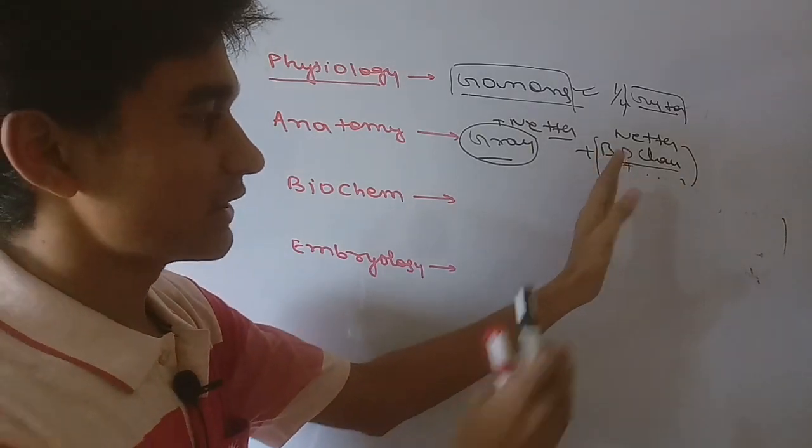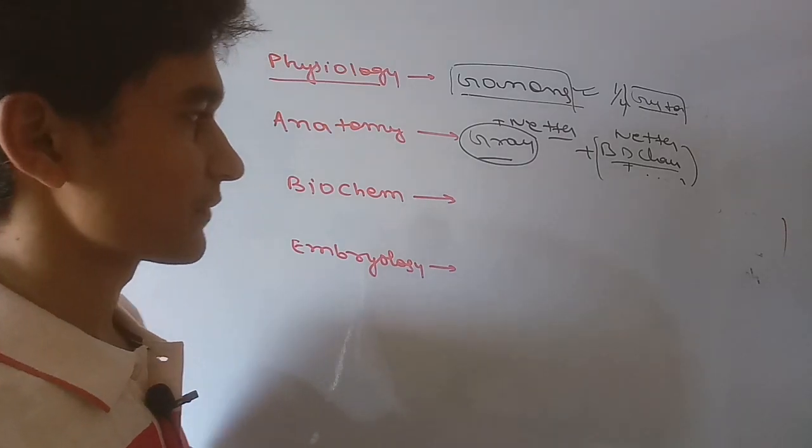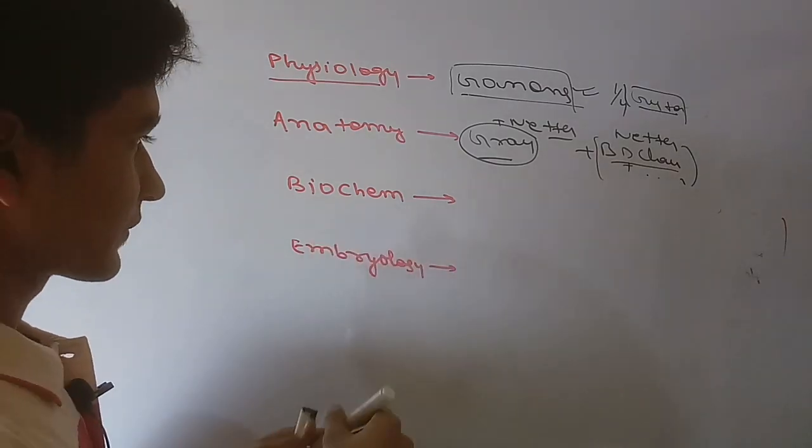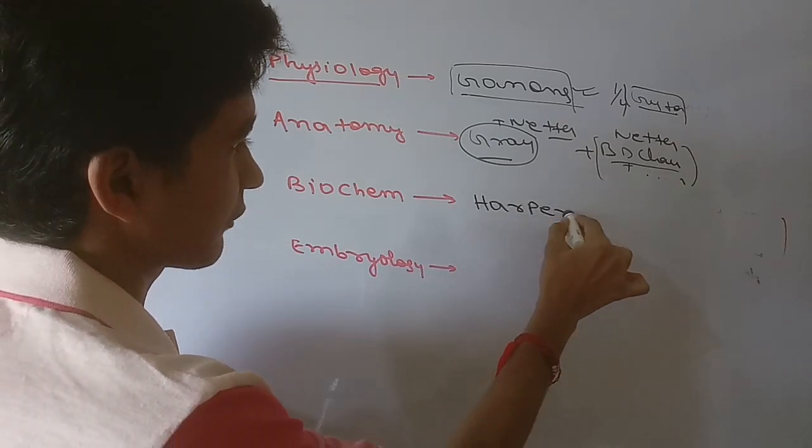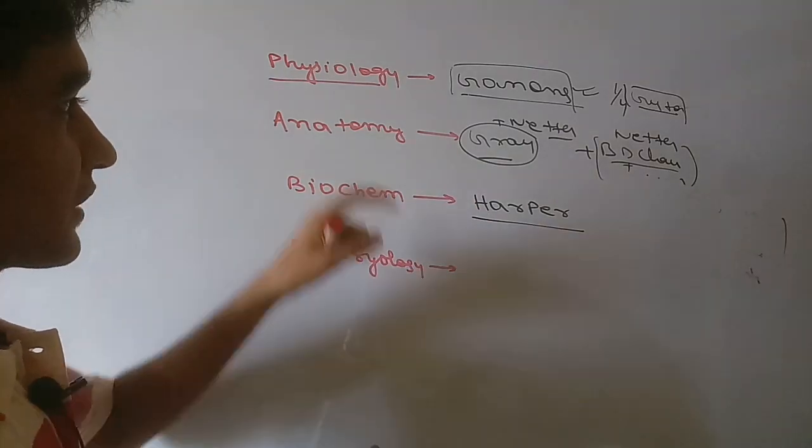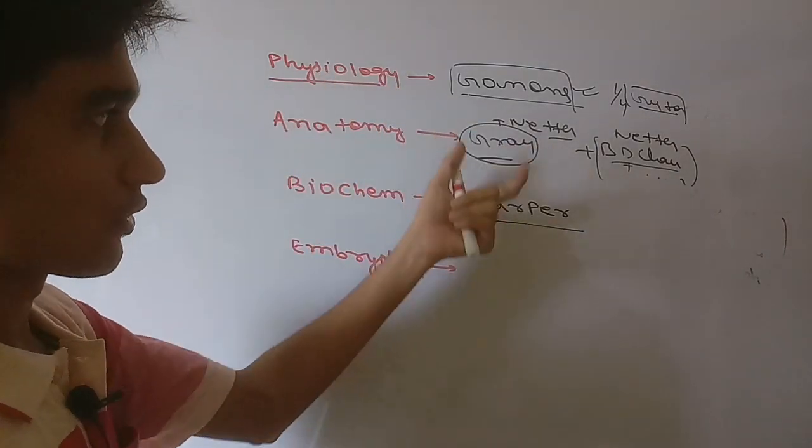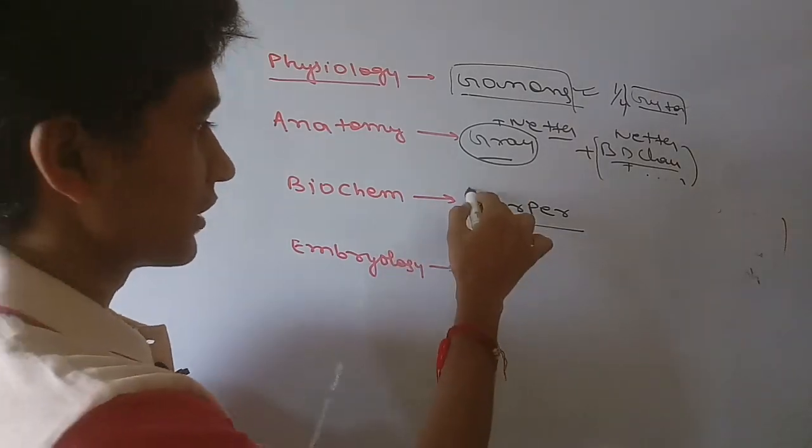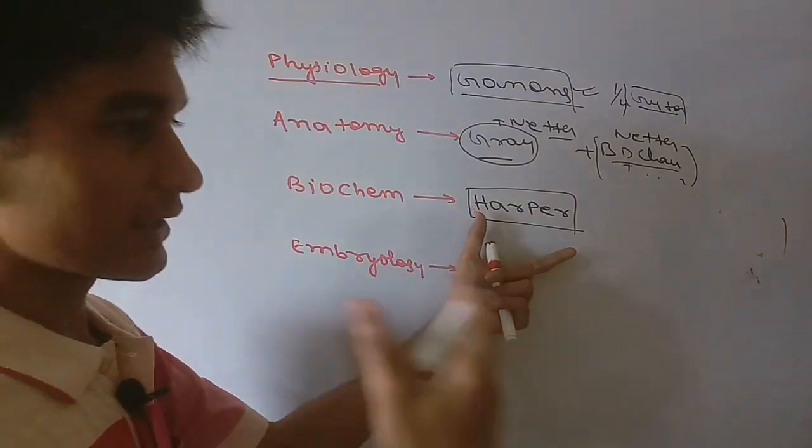Now coming to biochemistry. For biochemistry, the best book is Harper Biochemistry, but it is vast and we also do not get time to read Harper because we have anatomy and physiology that are also too vast. So students generally do not prefer Harper because it is too vast, although very high concepts are given in this.